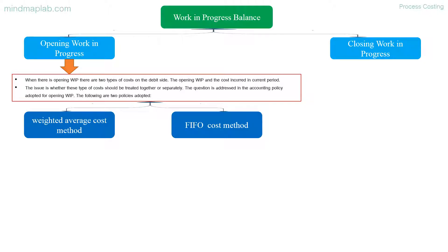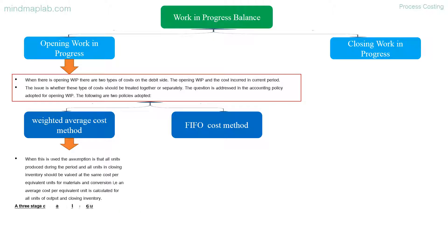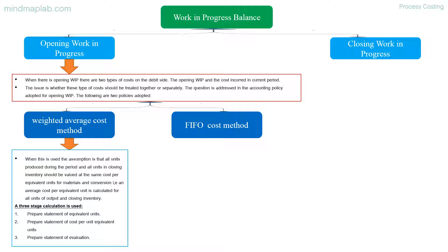Two policies are used: the weighted average cost method and the FIFO cost method. Under the weighted average cost method, the assumption is that all units produced during the period and all units in closing inventory should be valued at the same cost per equivalent unit for materials and conversion. A three-stage calculation is used: prepare a statement of equivalent units, prepare a statement of cost per equivalent unit, and prepare a statement of valuation.